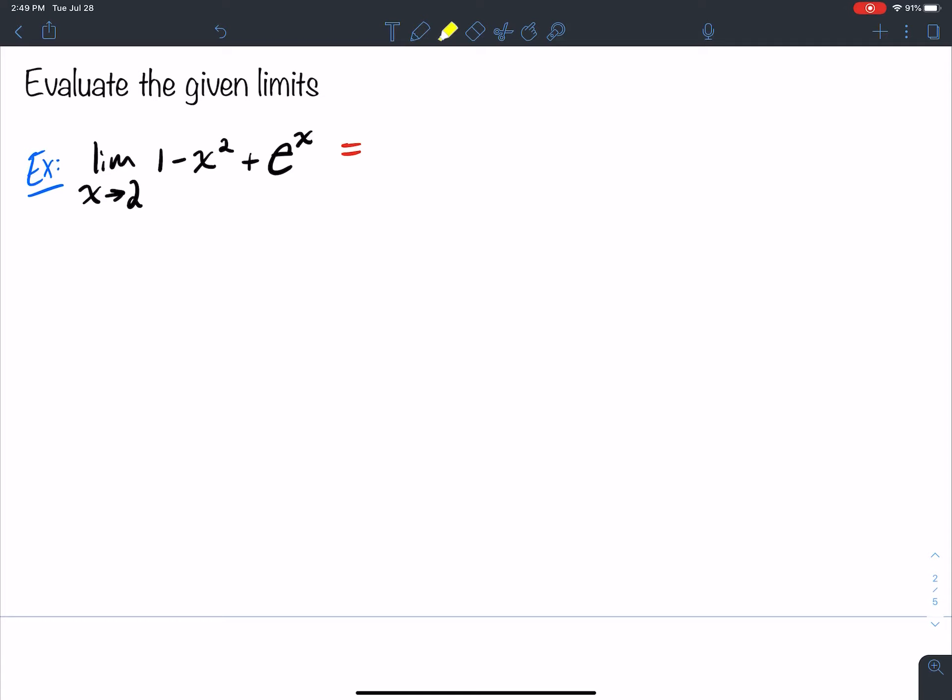So whenever I do this, literally what I do is I always try to plug into my function here and see if it works. So let's do that. Everywhere I see an x, I'm going to plug in a 2. So I have 1 minus 2 squared plus e to the 2. This becomes 1 minus 4, which is negative 3, and then e squared. And that's my answer right there.